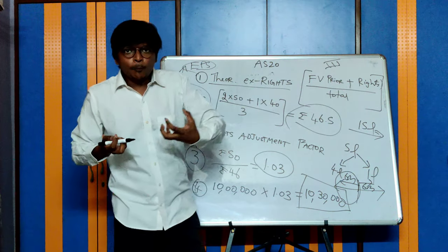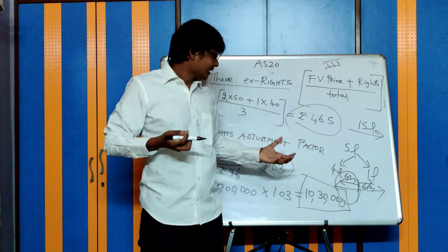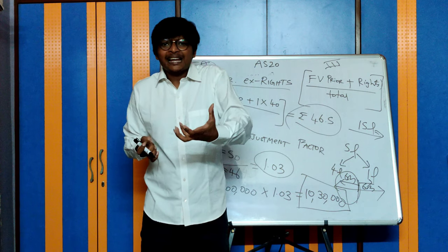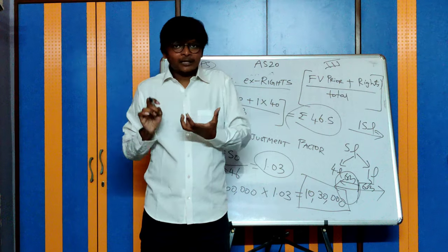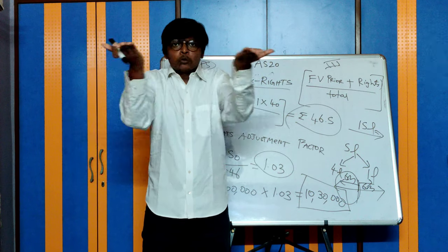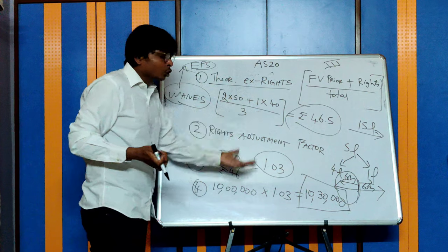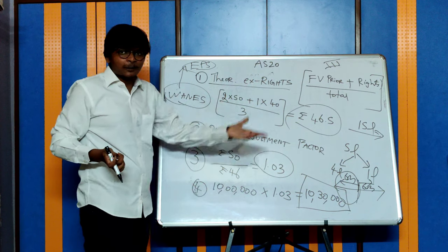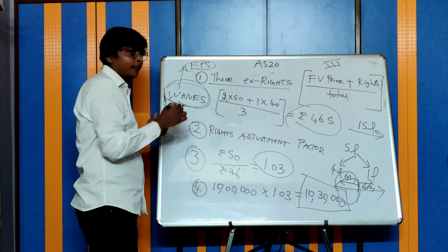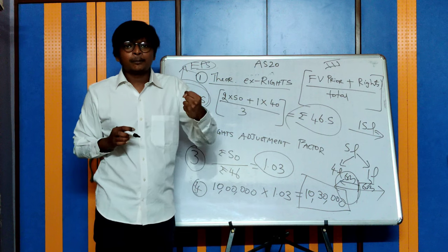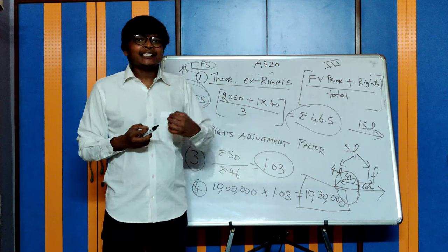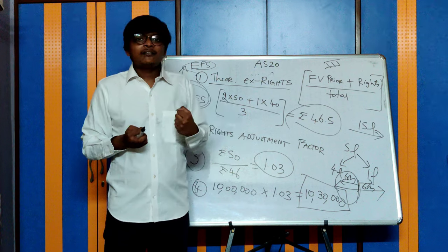Case 3: where funds are proportional to the number of shares issued - for example, issuing 5 lakh shares at the market price of ₹50. No adjustment is required. Simply compute the normal weighted average number of equity shares. Let us now proceed to the next section where we discuss diluted EPS.